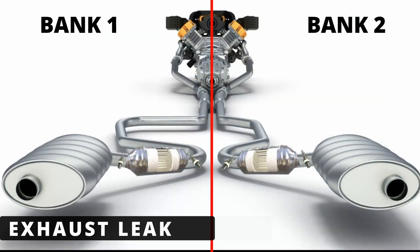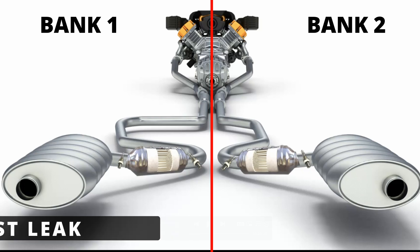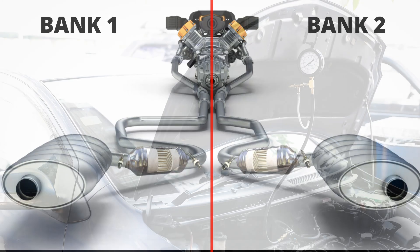The fifth cause could be an exhaust leak. A small exhaust leak before the oxygen sensor in Bank 1 can introduce excess air into the system, causing the ECM to overcompensate with more fuel, leading to a rich condition.